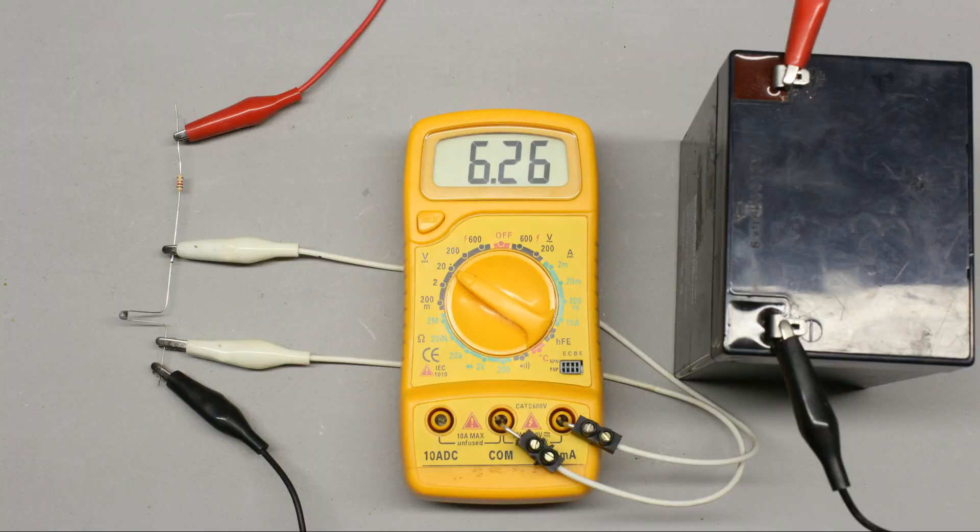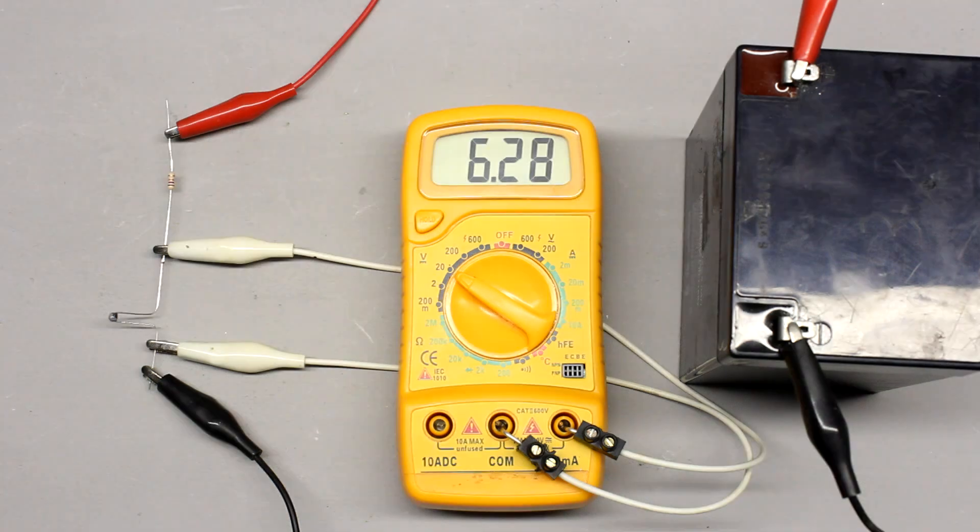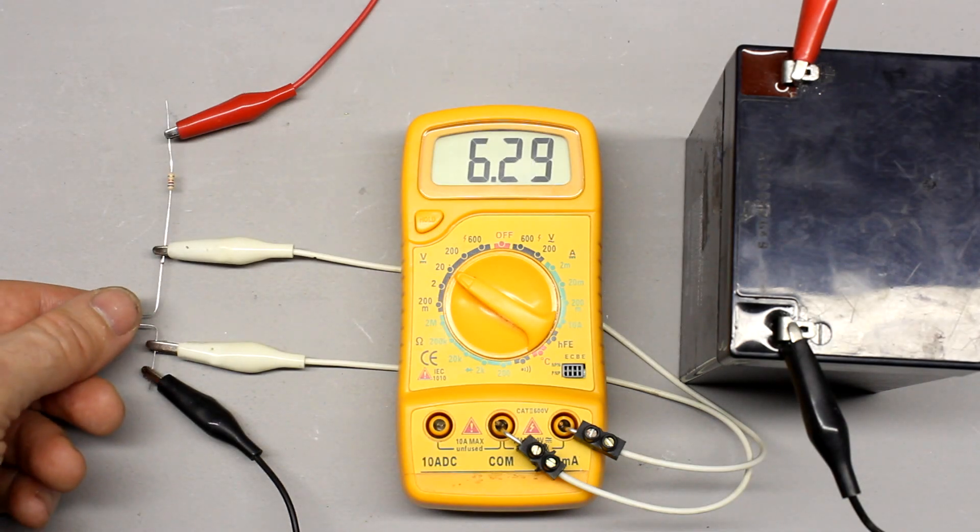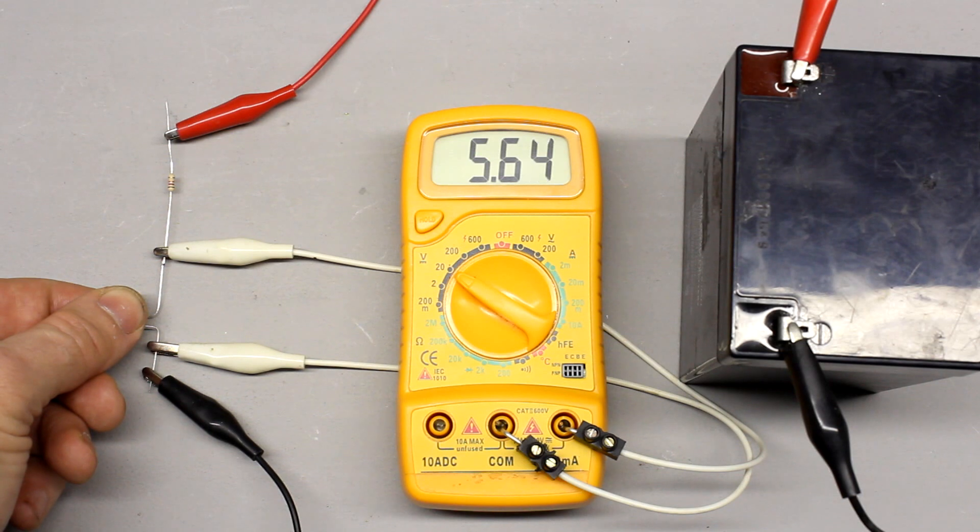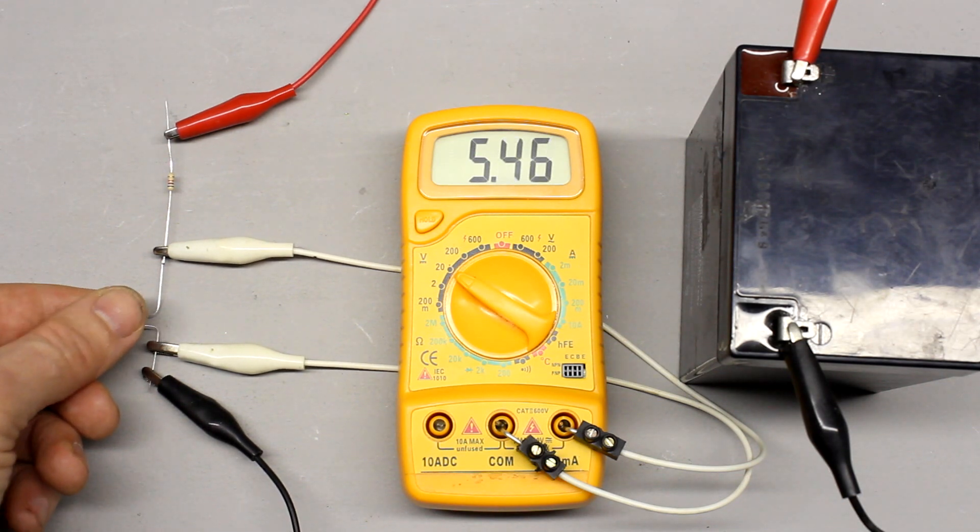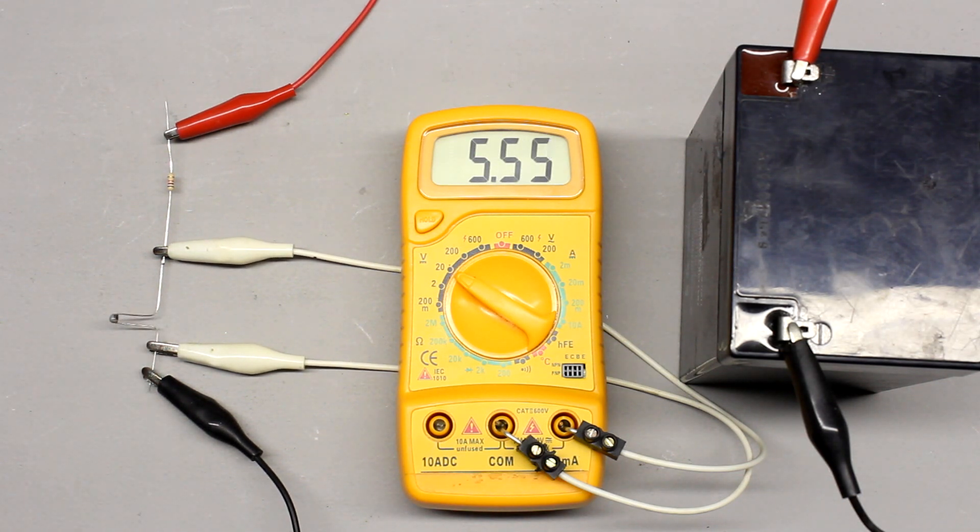NTC means negative temperature coefficient. The resistance of those devices decreases significantly with increasing temperature. An NTC resistor can operate as temperature sensor. As you can see, the voltage drop decreases with increasing temperature.